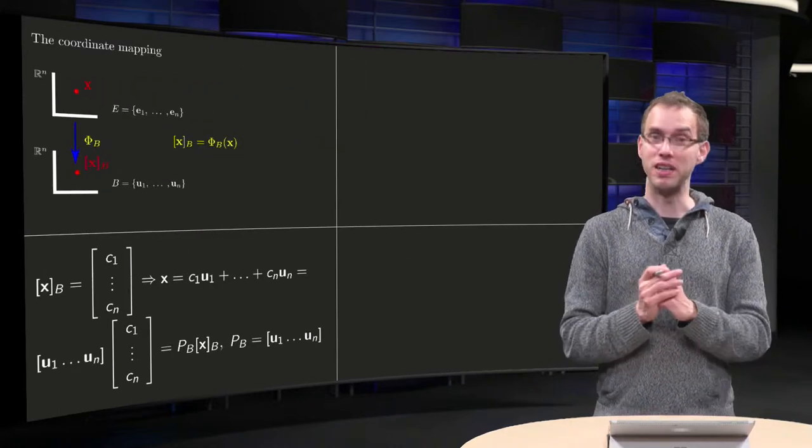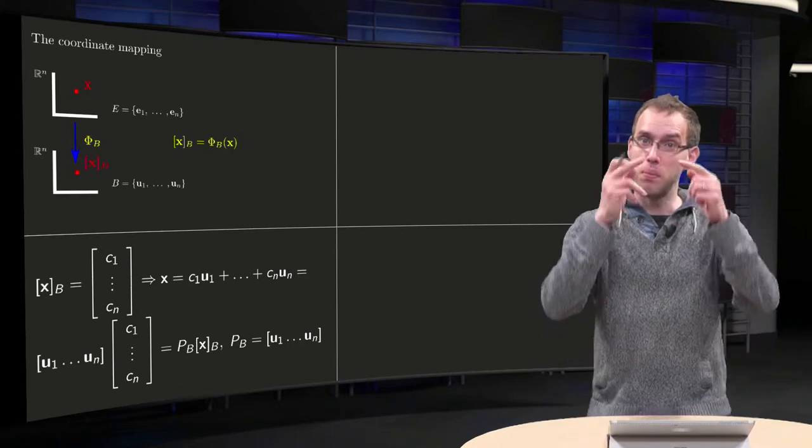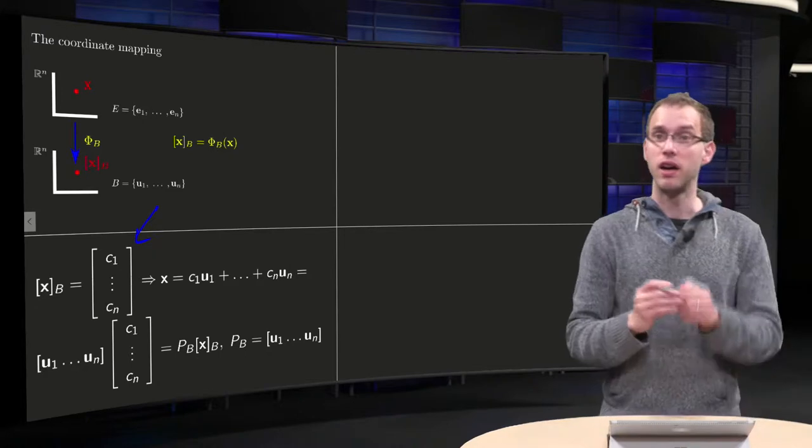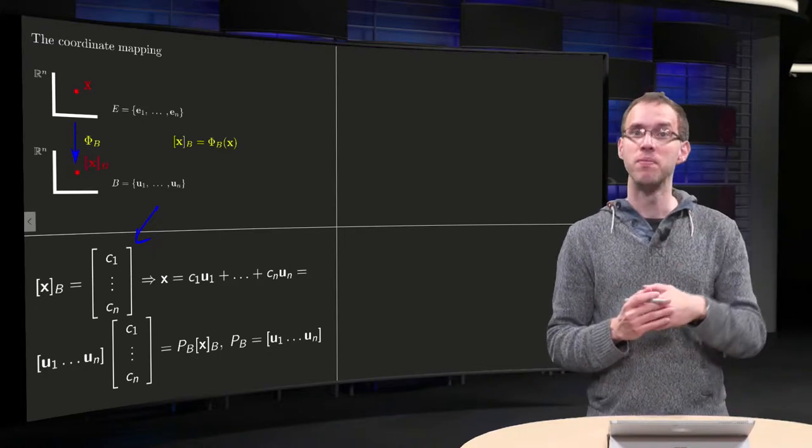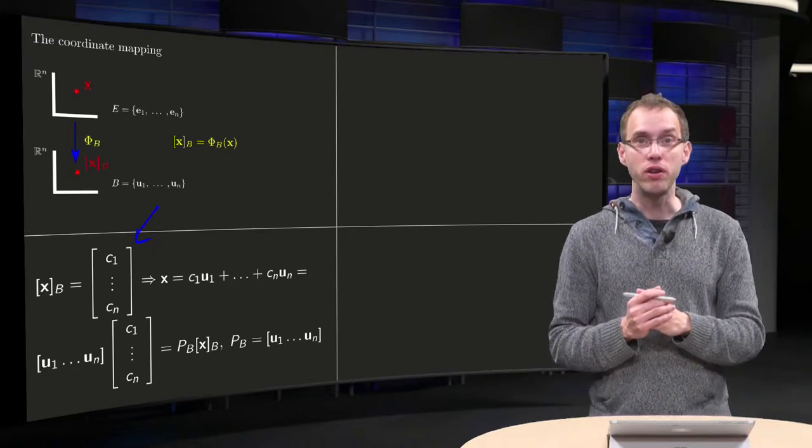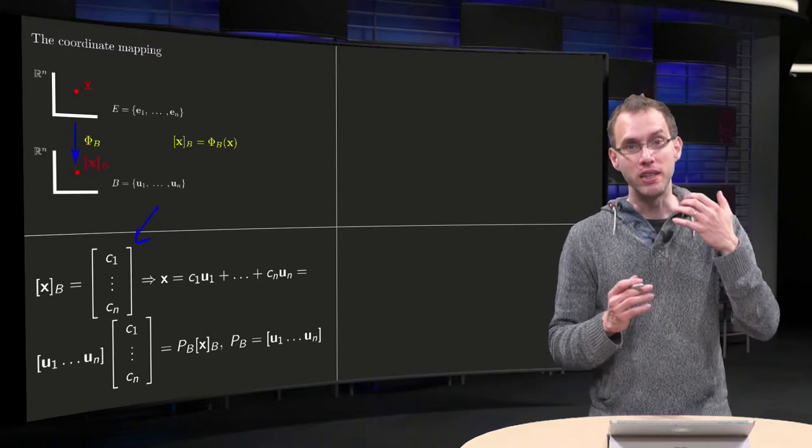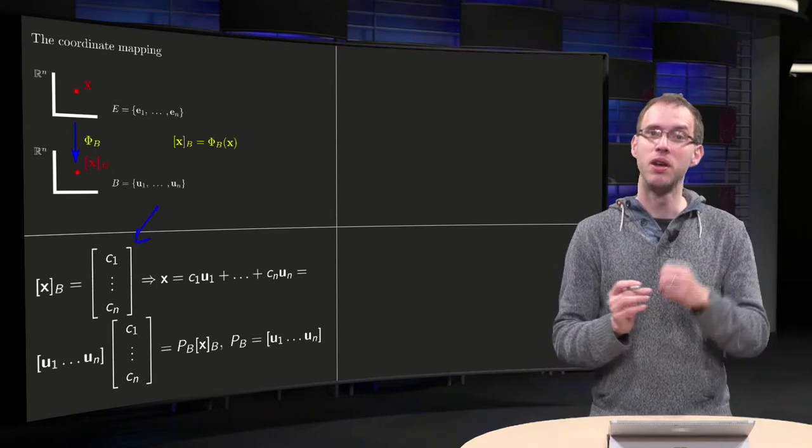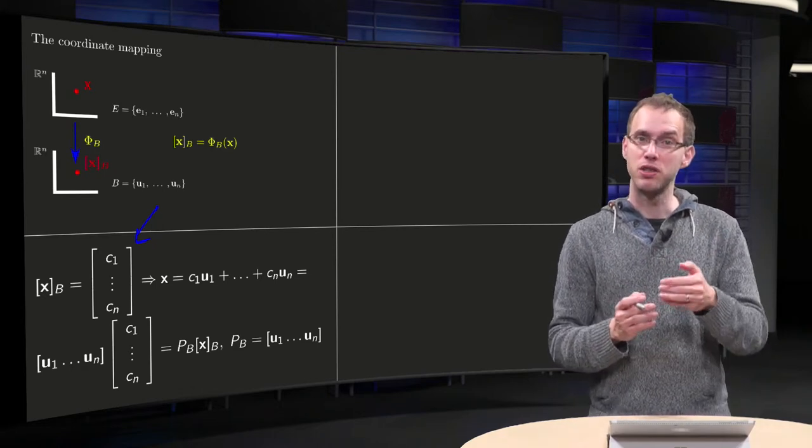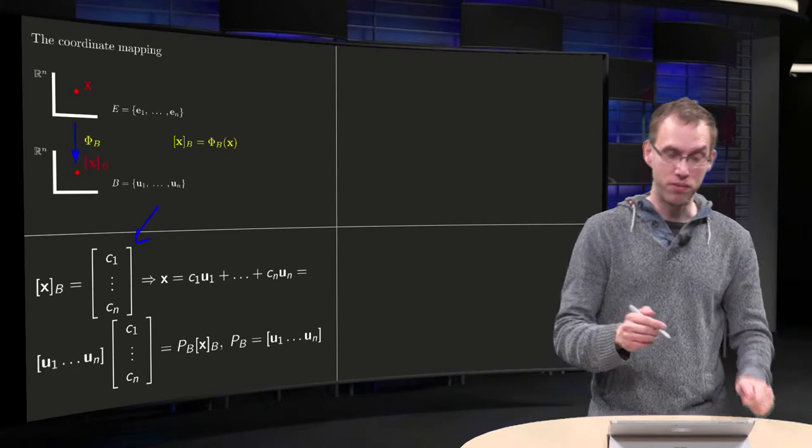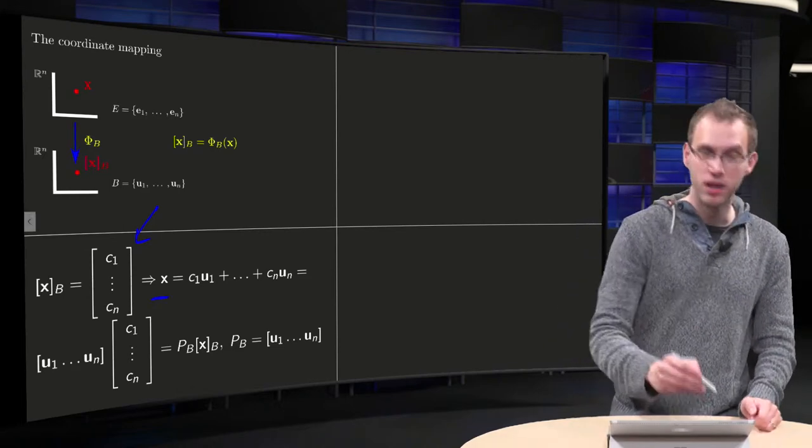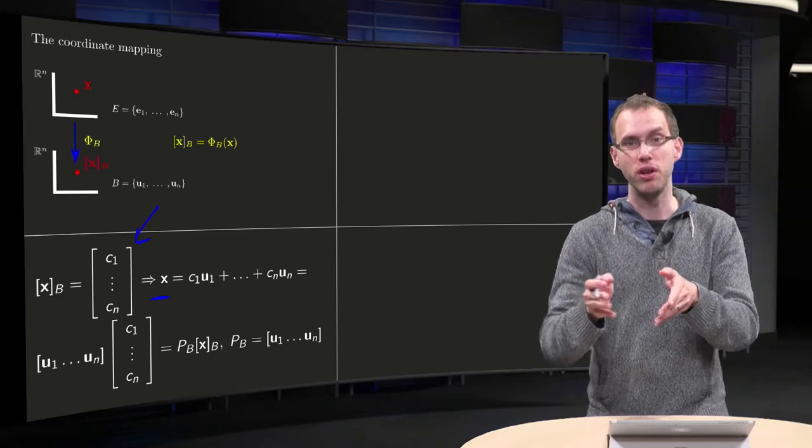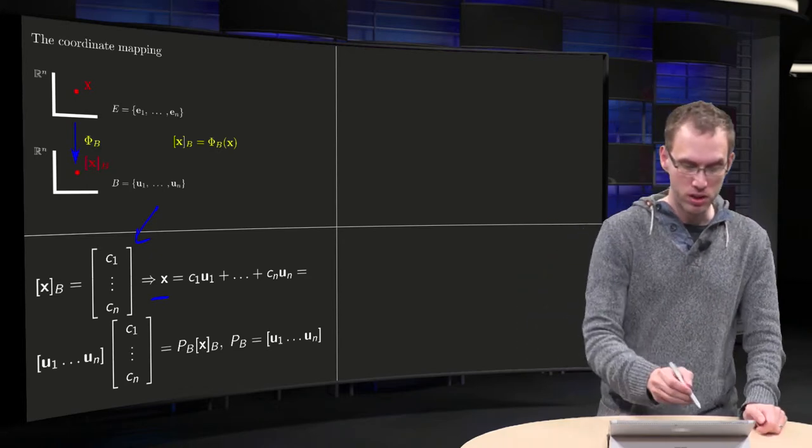We can find this matrix. First we start below by setting xB as C1 up to Cn. xB is the coordinate vector of x, so it has n components because in the basis B there are n vectors. Then if xB has coordinates C1 up to Cn, you can find back x: x equals C1 u1 plus C2 u2 plus C3 u3 up to Cn un.